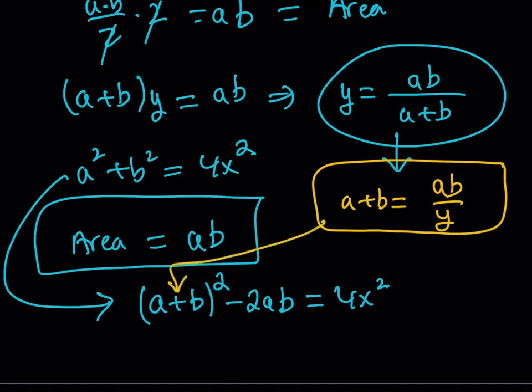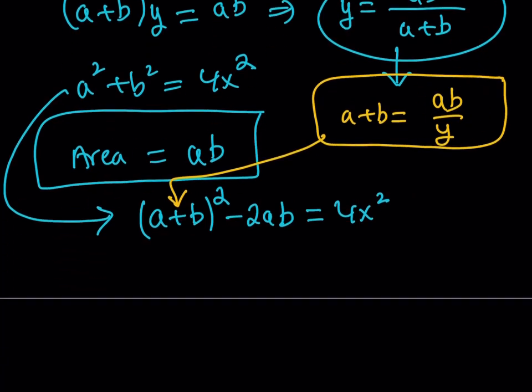So area is equal to a times b. So then the question is, can I just get rid of the a and b and express this in terms of x and y only? And yes, there is a way to do that. But how do we do it? Well, it's just going to take some algebraic manipulations, and here we go. Okay, I'm going to start with this equation.